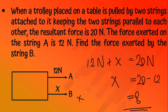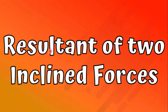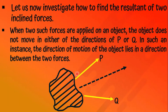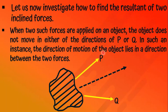Resultant of two inclined forces: when two inclined (non-parallel) forces P and Q are applied on an object, the object does not move in either the direction of P or Q. Instead, the direction of motion lies between the two forces — the object moves in a direction in between P and Q.